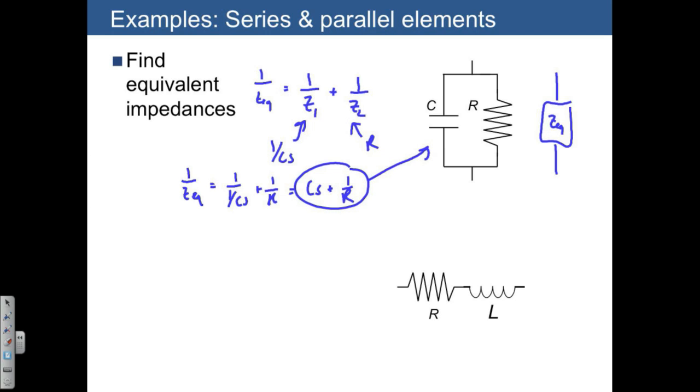Similarly, we have the resistor and the inductor below, where in series, the equivalent impedance, maybe we'll call this one ZEQ prime, is going to be the sum of the two separate impedances, Z1 and Z2, where for Z1, we have the resistor that's just going to be R. And for the inductor, it's going to be LS. So here, we have equivalent impedances for a resistor and a capacitor in parallel, and for a resistor and inductor in series.